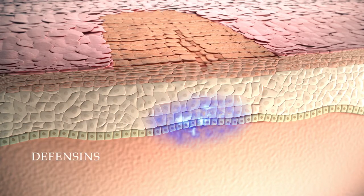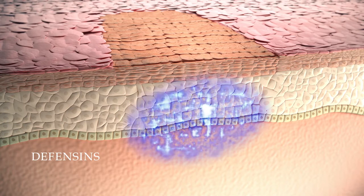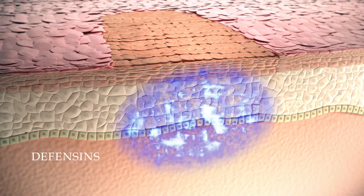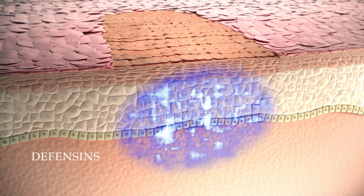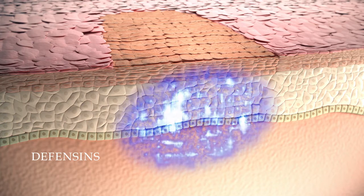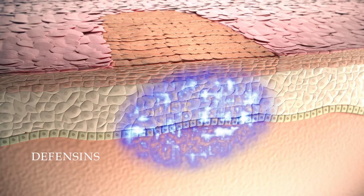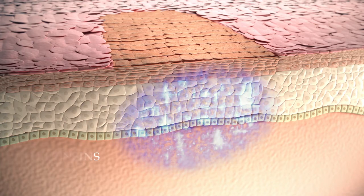Topical application of hyaluronan stimulates the synthesis and release of beta-2 defensin, a very potent antimicrobial peptide, by migrating keratinocytes. Hyaluronan improves the quality of treatment in every clinical situation, thereby offering an innovative option to healthcare professionals and patients.